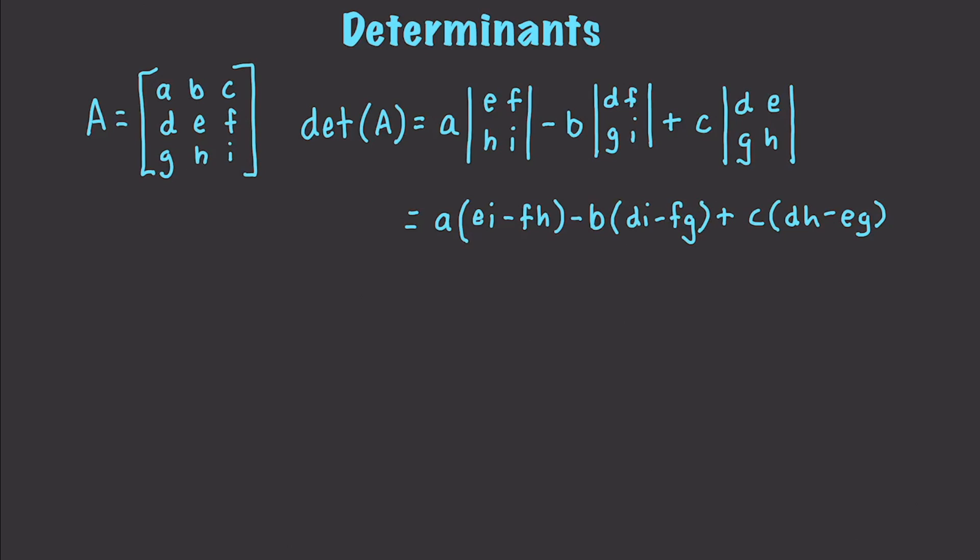Now for larger matrices, larger than 3 by 3, you can continue with this formula until you get to a 2 by 2 matrix that you can then use with the formula A D minus B C. But I'm going to show you another way to get larger matrices.